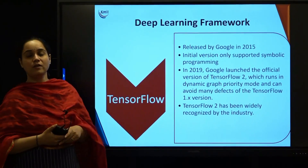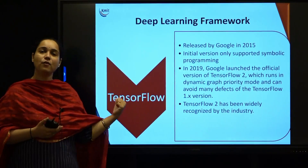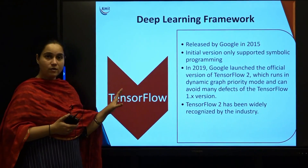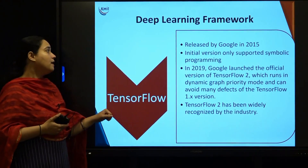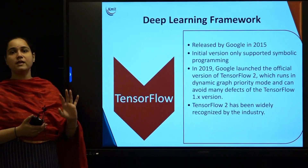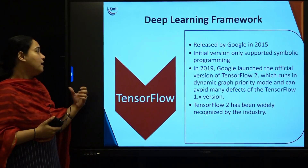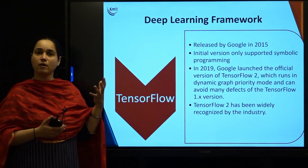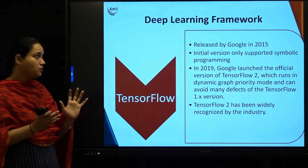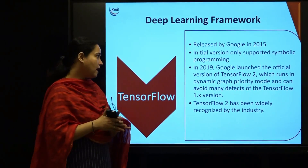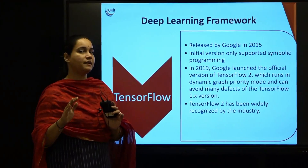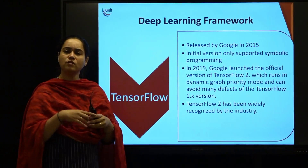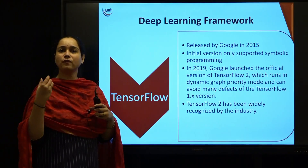The next framework is TensorFlow, which is part of your syllabus. TensorFlow was released by Google in 2015. Initial versions supported only symbolic programming, but in 2019 the second version was officially released by Google, which works on dynamic graph priority mode and overcame all the defects of the first version. The dynamic graph priority mode made efficient use of time and increased execution speed.